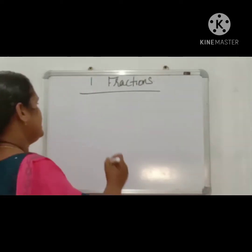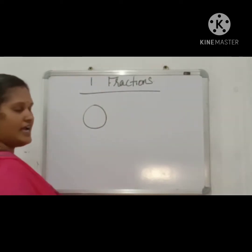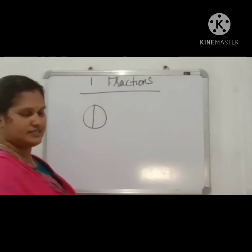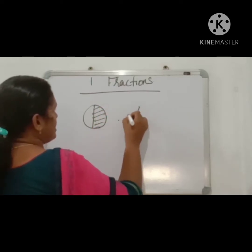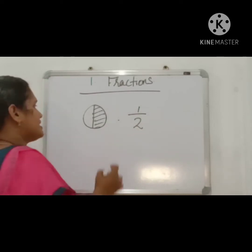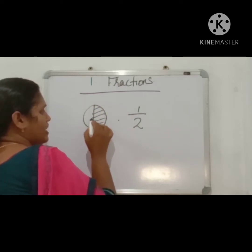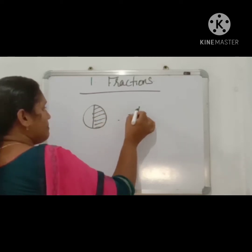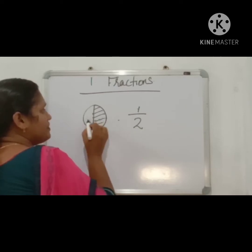For example, this is a circle. Divide it into two equal parts. One part is called 1 by 2, that means half. The whole circle is divided into two equal parts. The shaded portion is one part out of two.